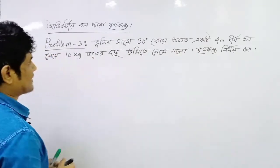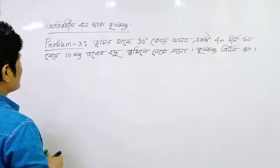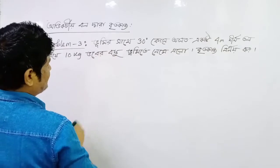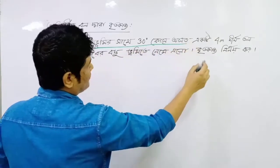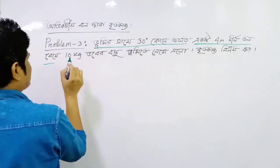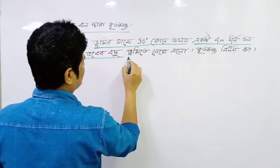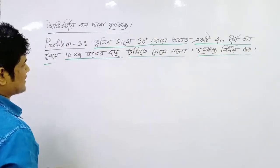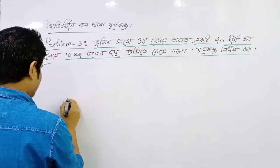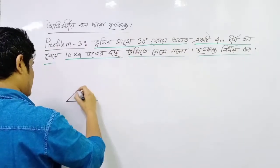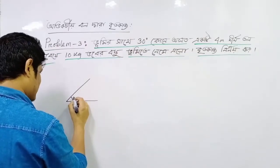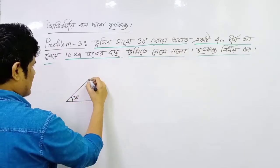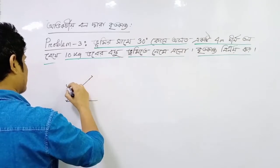So problem number 3. We have to say that the incline is 30 degrees. The mass is 60 degrees from the vertical, so the mass is equal to 30 degrees on the incline and the mass is equal to 4.